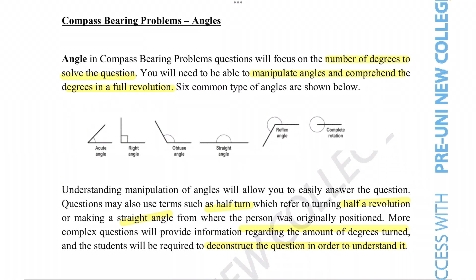If your angle is less than 90 degrees, you're called an acute angle. If you're exactly 90 degrees, it is called a right angle.